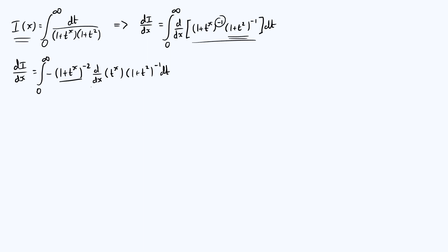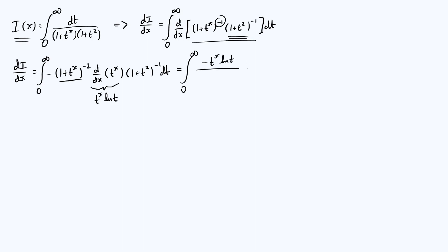How do we differentiate t to the x? When we differentiate an exponential term like this, we get the same thing multiplied by the natural log of t. So we take this t to the x times ln t and use that to rewrite our integrand. The result is the integral from 0 to infinity of minus t to the x times ln t, divided by 1 plus t to the x squared, times 1 plus t squared, with respect to t.